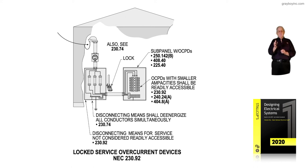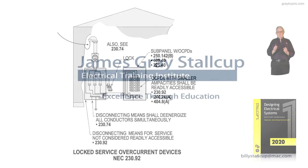The fuses do have to be readily accessible to the user in the subpanel located inside the facility. The disconnecting means for the service is not considered readily accessible by 230.92, and that's what figure 6-49 is illustrating.